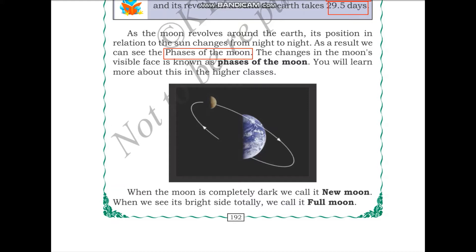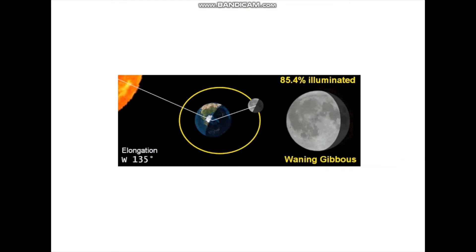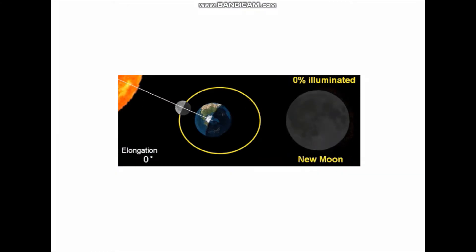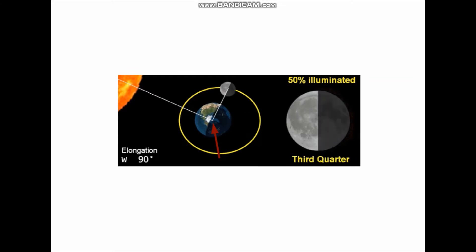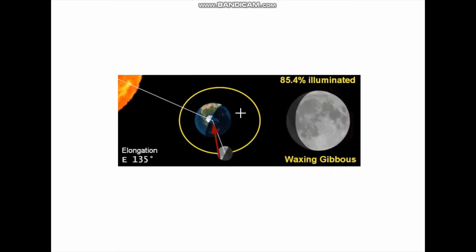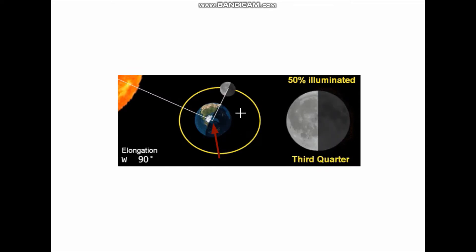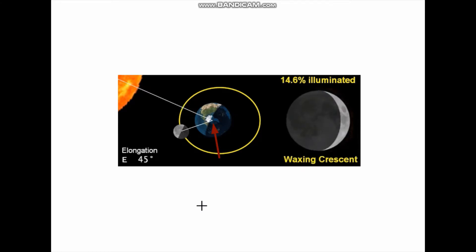How do they change? Every night, the position of the moon in relation to the Sun changes, which is why there are changes in the moon's visible phases. When the moon is completely dark, we call it new moon. When we see its bright side totally, we call it full moon. You can see in this diagram what people on a part of the Earth see — from new moon, some part illuminated, half moon, growing bigger, until you see the full moon.